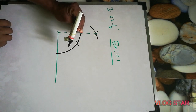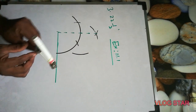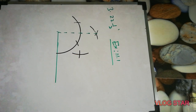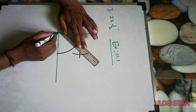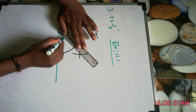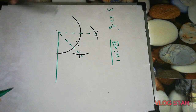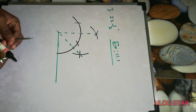For 45 degrees, from the 90 degree arc take more than half, cut it here, then from this point cut again — this gives 45 degrees. Make a dotted line for 45 degrees. After that we'll make half of that to get 22 and a half degrees.